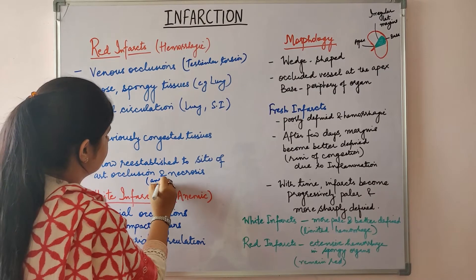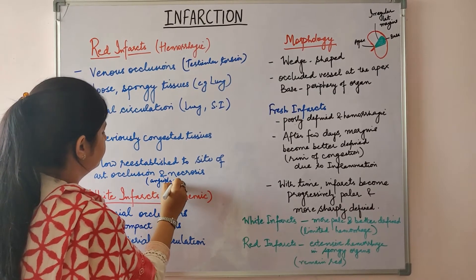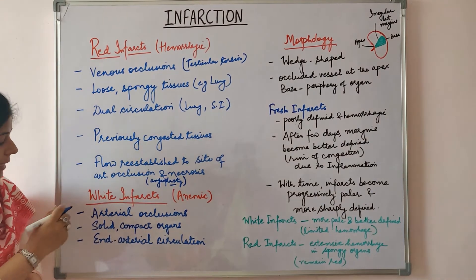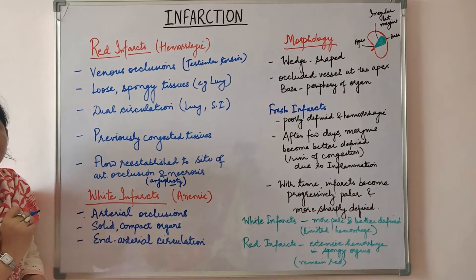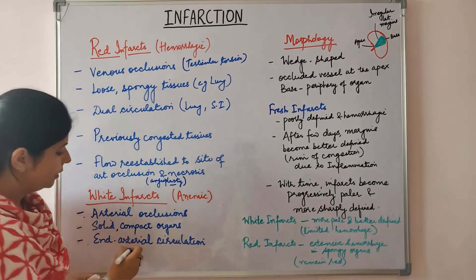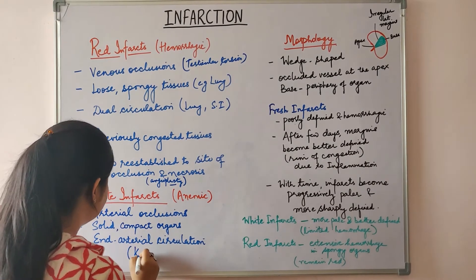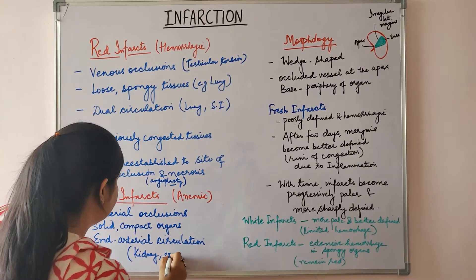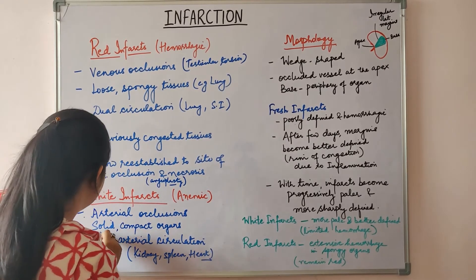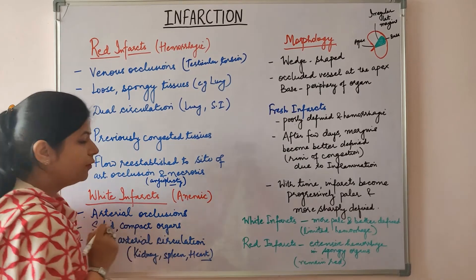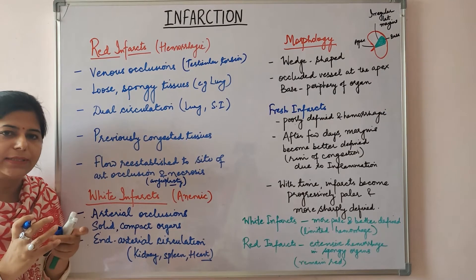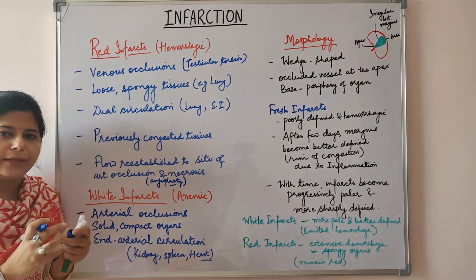Red infarcts also occur where flow is re-established to a site of arterial occlusion and necrosis, for example following angioplasty. White or anemic infarcts are seen with arterial occlusions in solid compact organs with end arterial circulation, for example kidney, spleen, and heart, where tissue density limits the seepage of blood into the infarcted zone.